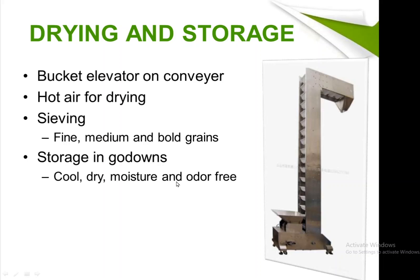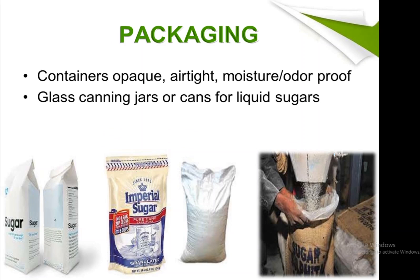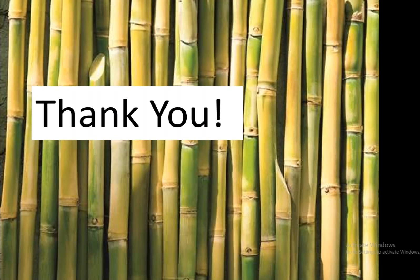A sieving process separates fine, medium, and bold sugar grains. The result is cool, dry, moisture-free and odor-free sugar, which is stored and packed in airtight, moisture-proof containers or glass canning jars and cans for liquid sugars. We hope this video is informative — stay connected and subscribe to the channel.